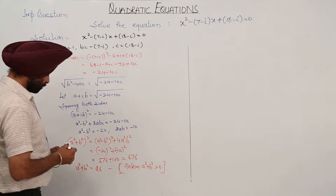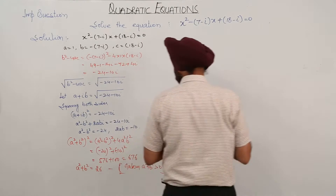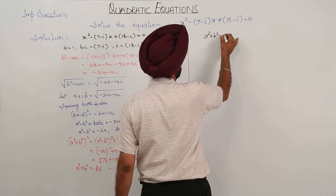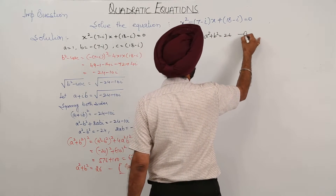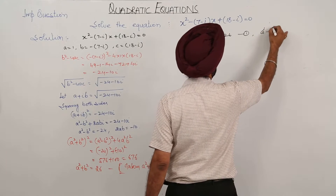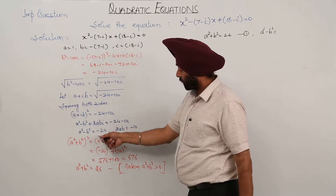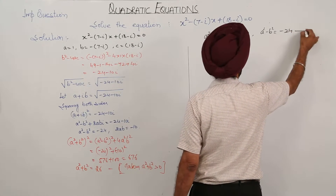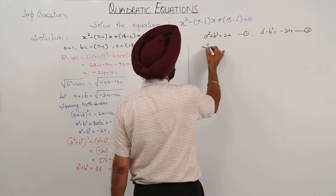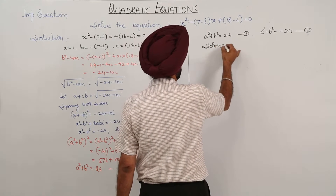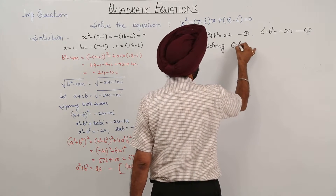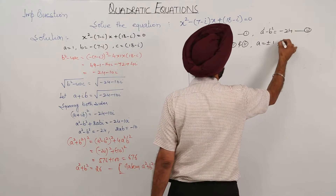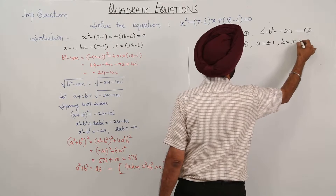We now have two equations: a² + b² = 26 (equation 1) and a² - b² = -24 (equation 2). Solving equations 1 and 2, we get a = ±1 and b = ±5.